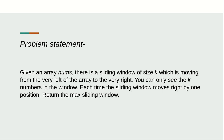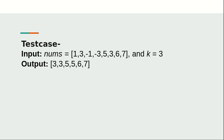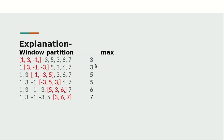This is the input array and a number k, which represents the window size. You need to find the maximum value present in each window. For example, with this array and window, the maximum present is three. As the window moves one step to the right, the maximum is again three. Moving one more step, the maximum would be seven.